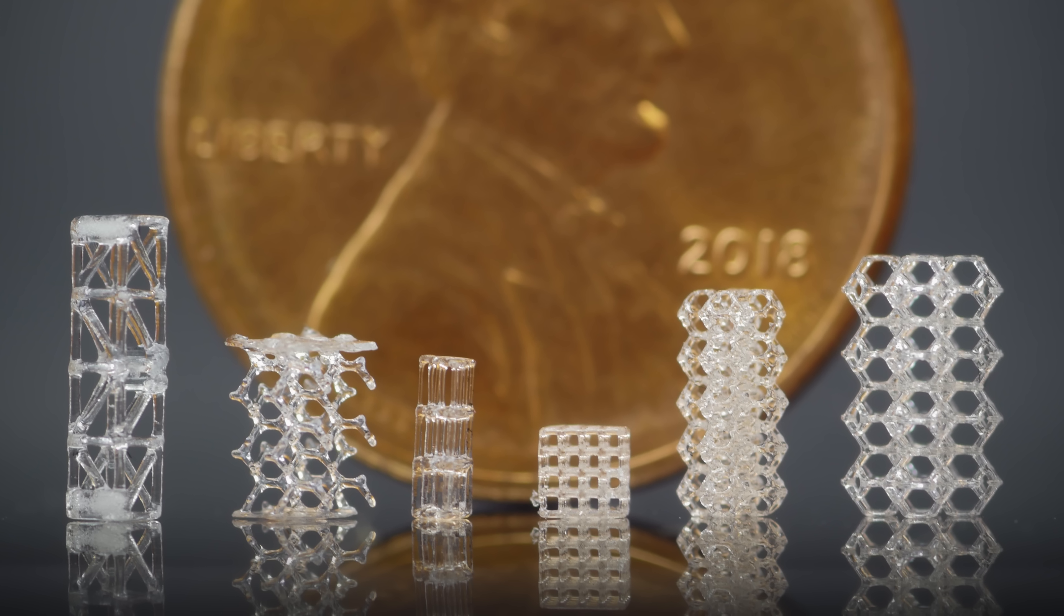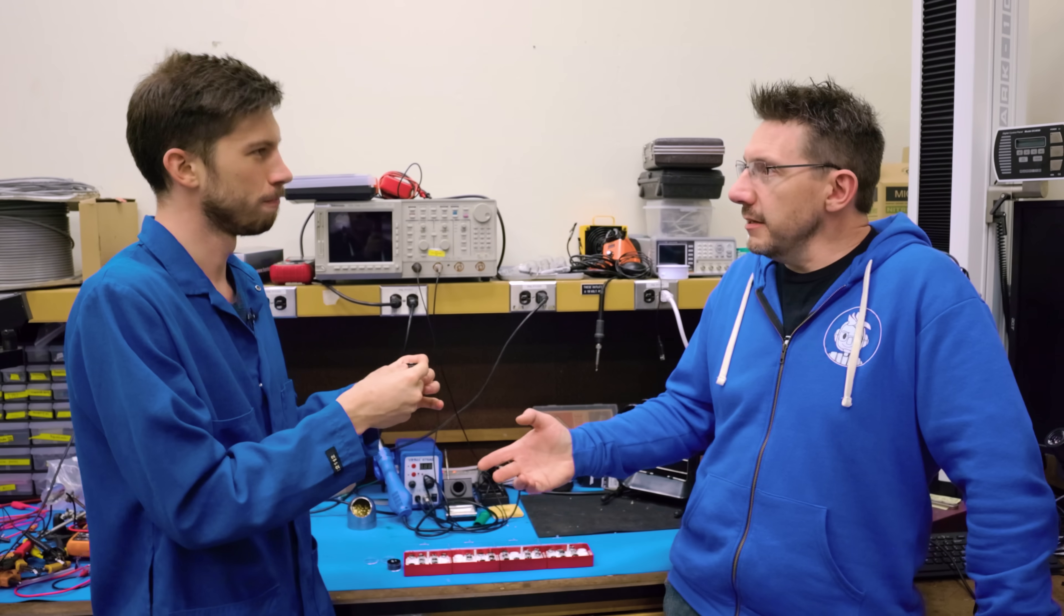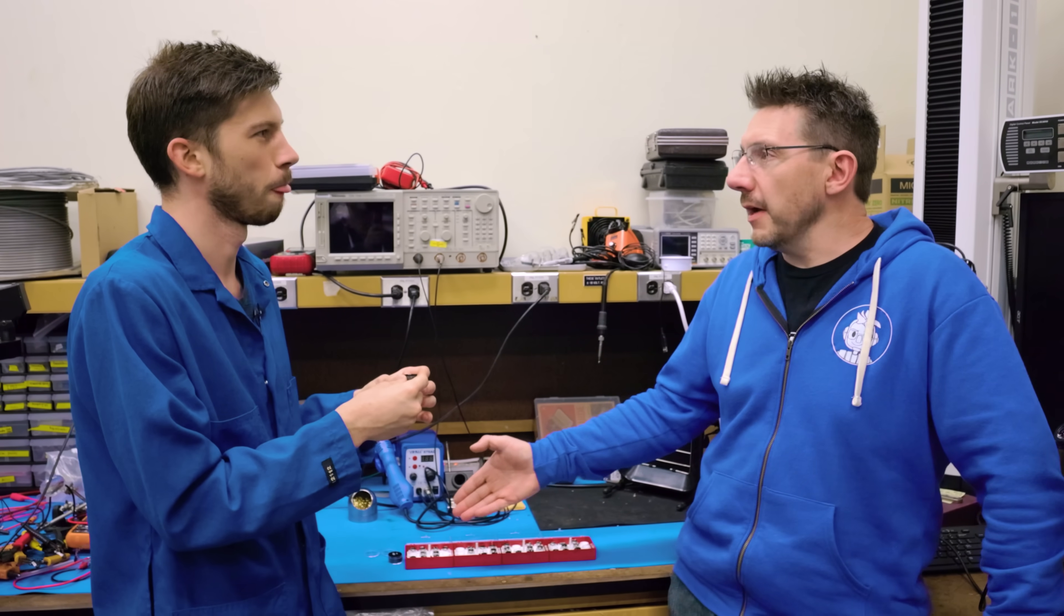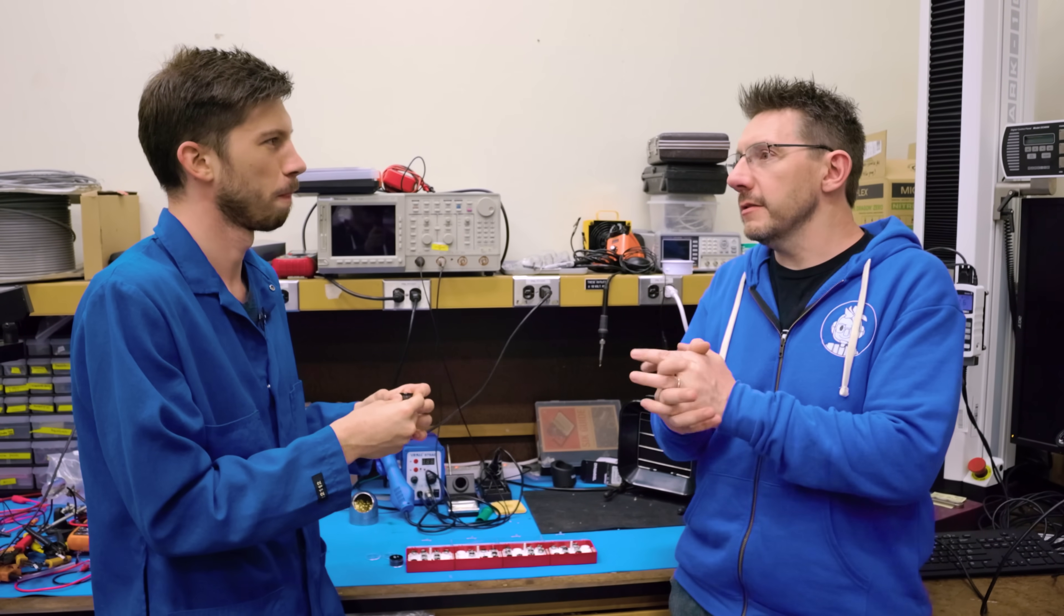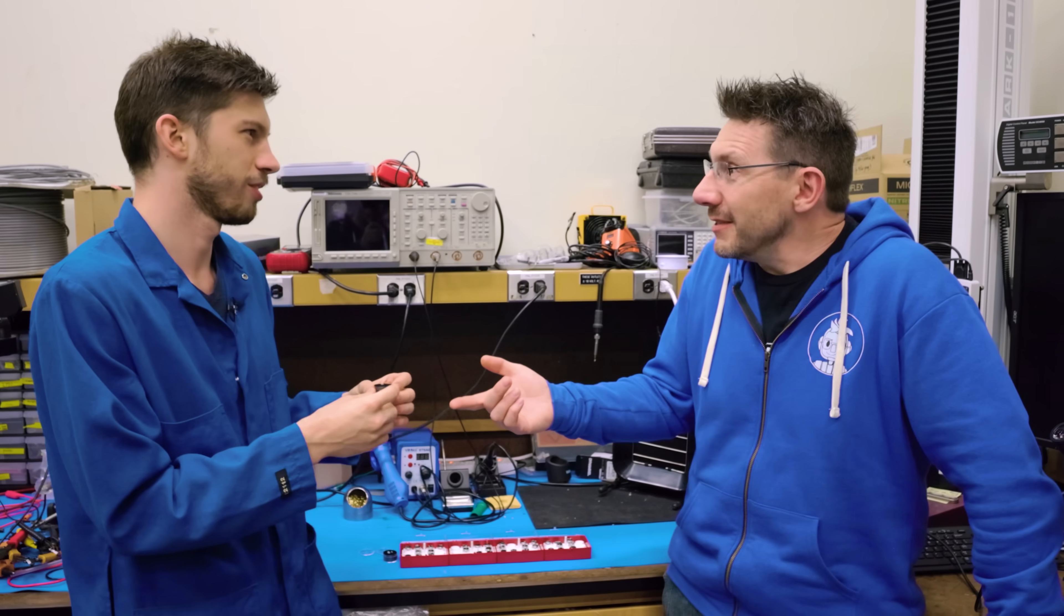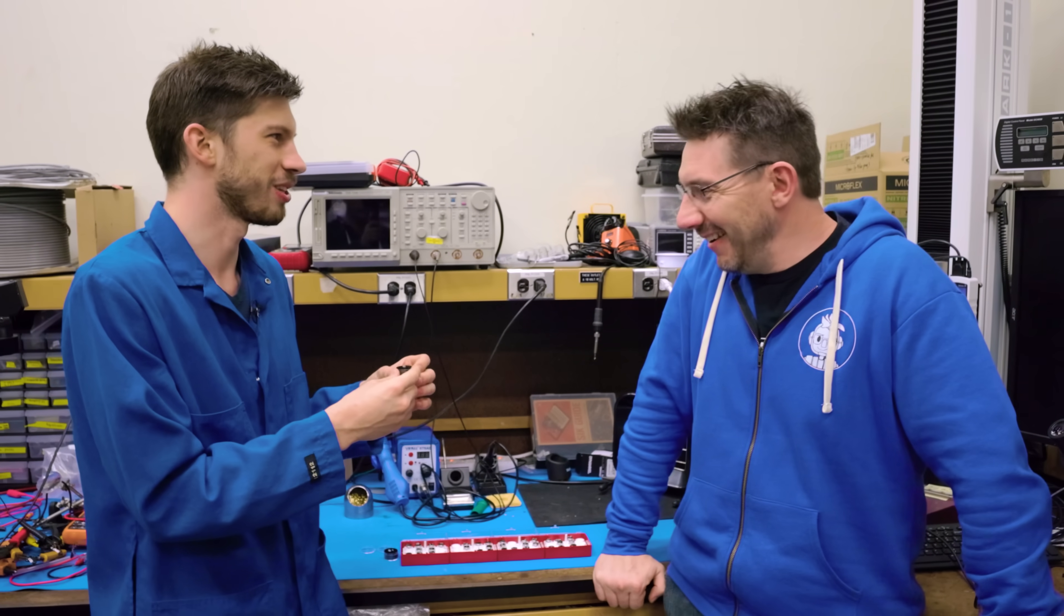In this case, down less than 10 nanometer roughness, which is what you need for lenses and for microfluidic devices. You don't want the turbulence that's generated by any sort of layer lines or anything like that in those devices or lenses. I mean, you'd have to grind these out.